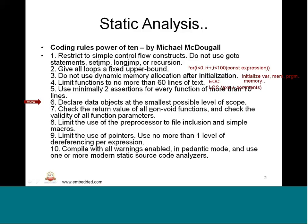The sixth rule: declare data objects at the smallest possible level of scope. That means if you are working at the innermost levels of scope — within a function or sub-function — it is better to declare only if it is required at that level. Use the declaration within that level of scope for any data objects that are going to hold the data.